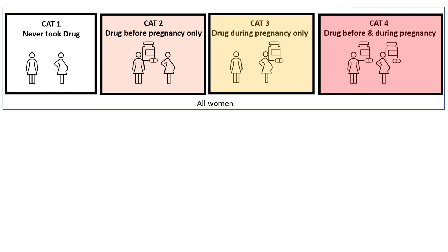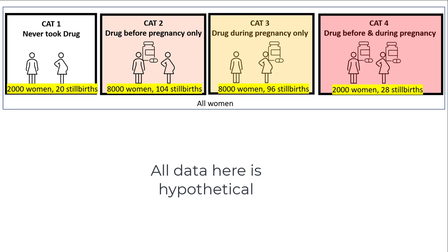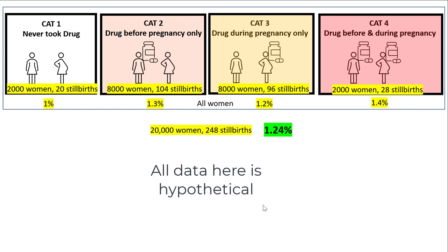The study didn't provide raw stillbirth numbers for each category, so I'll show how easy it is to arrive at results like those of the study while hiding the fact that the drug significantly increased risk of stillbirth. Here's a hypothetical example: category one — 2,000 women, 20 stillbirths (1.0%); category two — 8,000 women, 104 stillbirths (1.3%); category three — 8,000 women, 96 stillbirths (1.2%); category four — 2,000 women, 28 stillbirths (1.4%). Overall, that's 20,000 women and 248 stillbirths — an overall stillbirth rate of 1.24%.